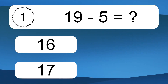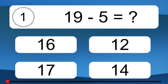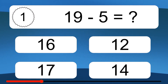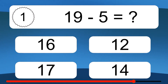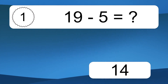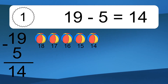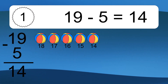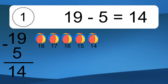19 minus 5 equals what? 19 minus 5 equals 14. Let's count it: 18, 17, 16, 15, 14.